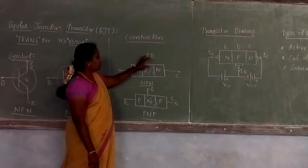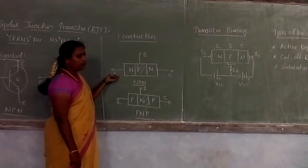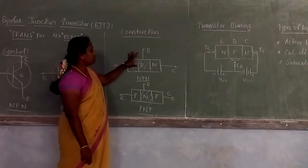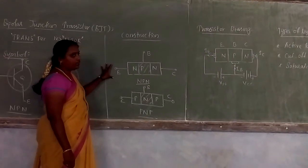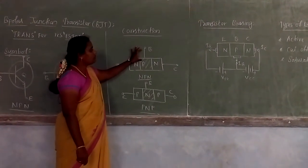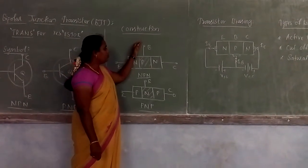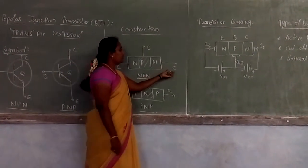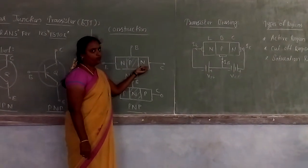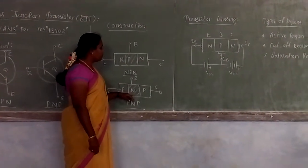In both transistors, the three terminals are emitter, base, and collector. The emitter is a heavily doped region. The base is a lightly doped region. The collector is a moderately doped region. This is the same for both NPN and PNP transistors.